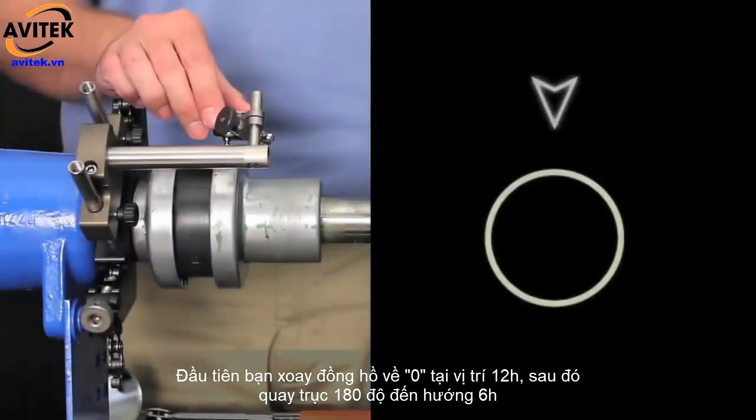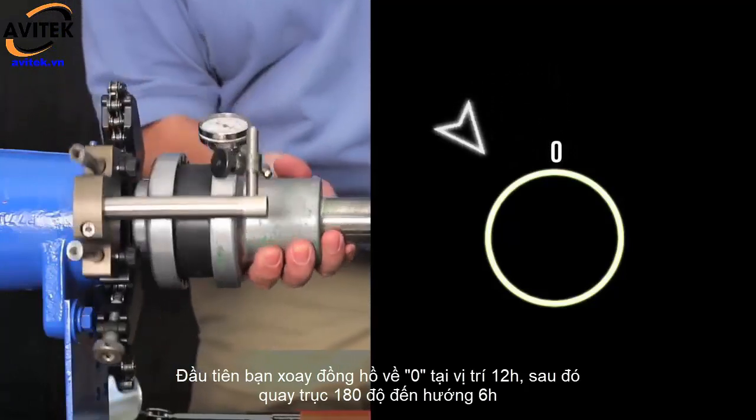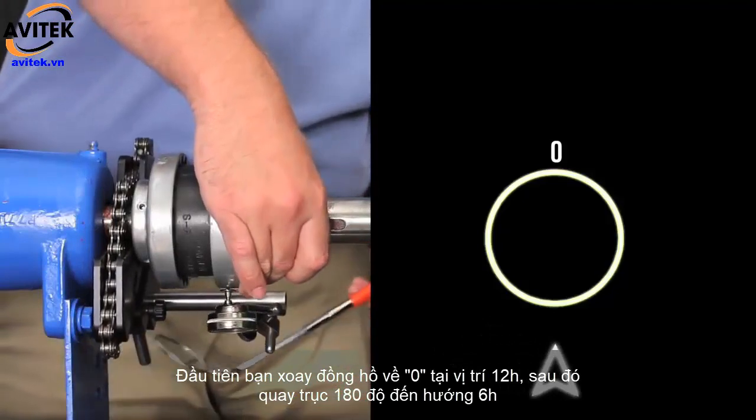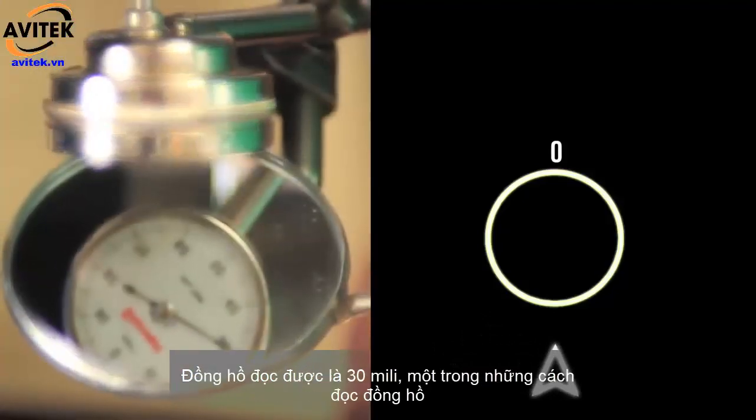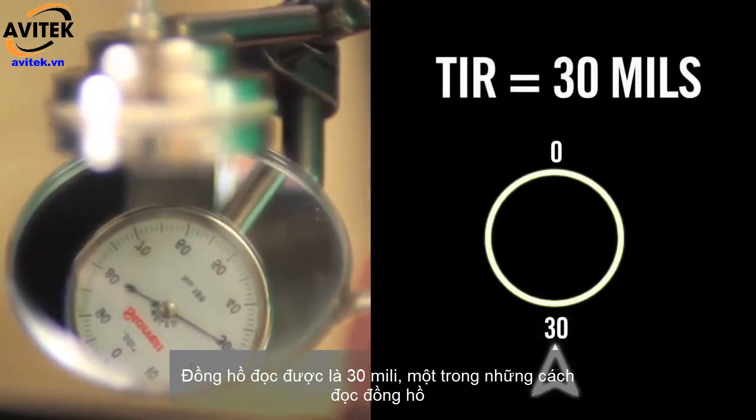I'll zero my dial indicator at 12, and then roll it 180 degrees to 6 o'clock. It reads 30 mils, which represents the Total Indicator Reading, or TIR.